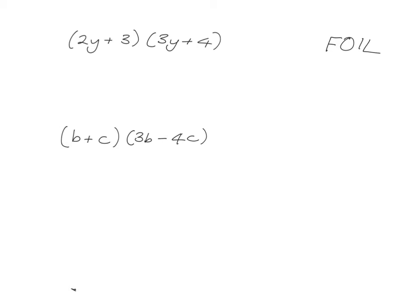I want you to try this out. I've got two examples here — see if you can multiply each of those out. Remember, everything in the first bracket needs to multiply with everything in the second bracket, and FOIL is a helpful way to remember to do that. Pause the video, try it now, and then we'll go over it.